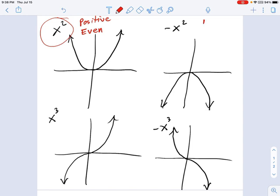Likewise, over here, this is called negative even. Because the coefficient is negative, but the exponent is an even number. And then over here, we have positive odd. Because the exponent is odd.